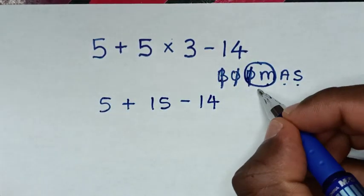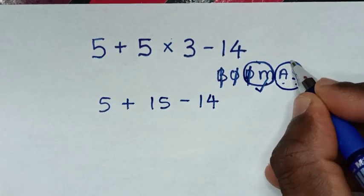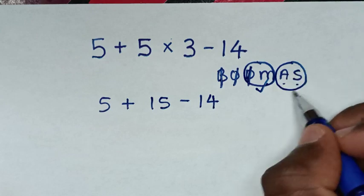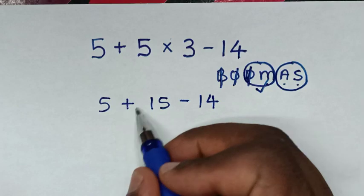After we deal with this multiplication, we'll deal with the group of addition and subtraction, according to which starts first from left to right. From this problem, it starts with addition, then subtraction.